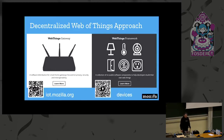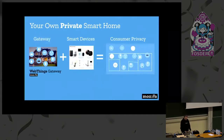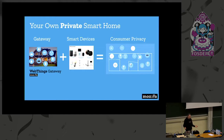To get started with the project, there is a gateway which is just a software component, and then you can buy different devices or build your own — which is quite interesting if you want to learn. They speak a common language called Web Things. You have a combination of the Mozilla gateway software deployed on a Raspberry Pi, different devices, and privacy is ensured by design because everything stays on your own network.